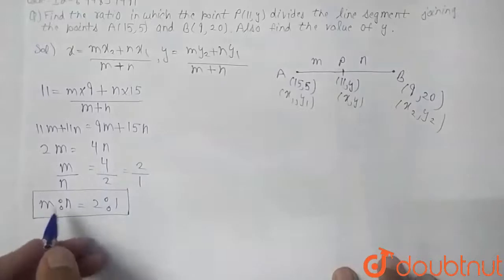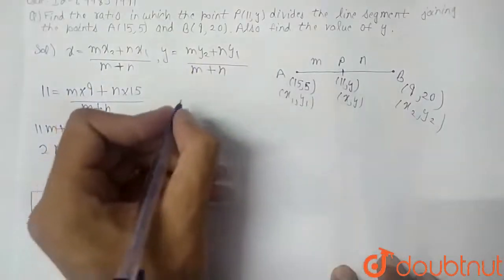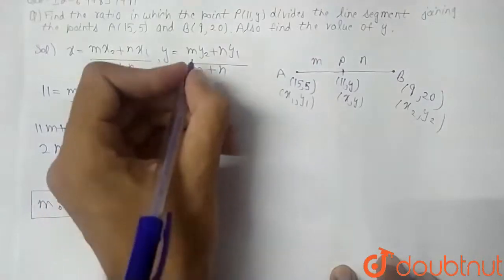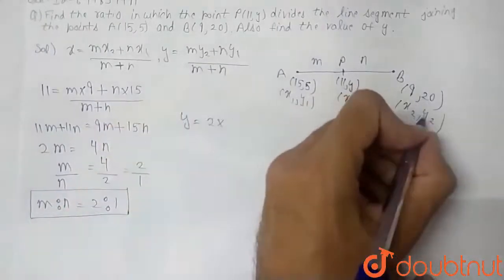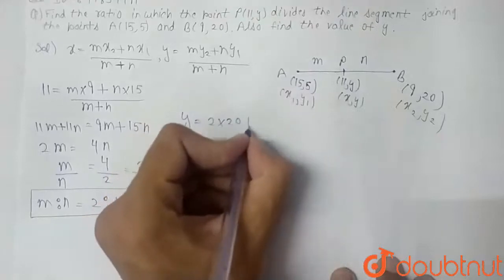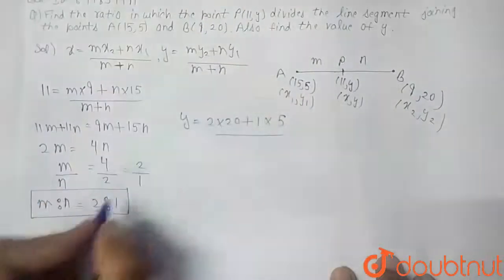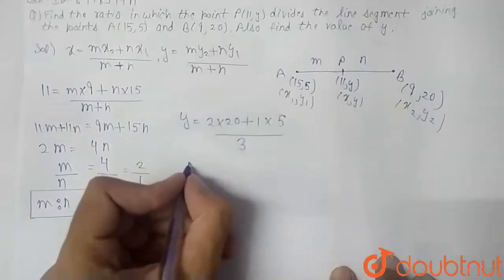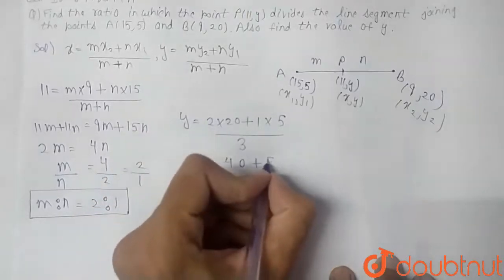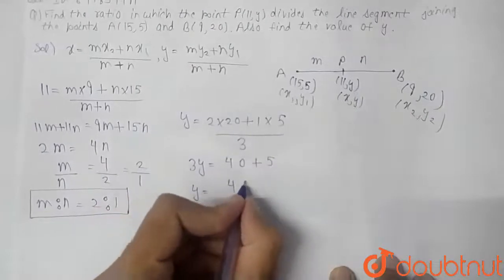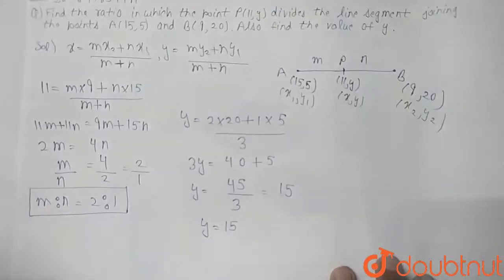Now we find the value of y using the ratio 2 : 1. Using the y-coordinate formula: y = (m·y2 + n·y1) / (m + n) = (2·20 + 1·5) / (2 + 1) = (40 + 5) / 3 = 45 / 3 = 15. So y = 15.